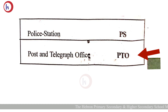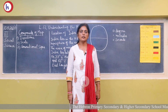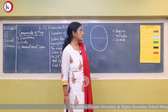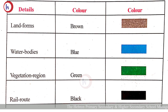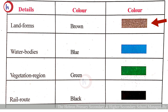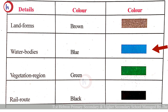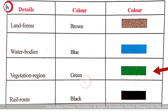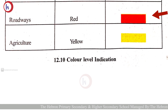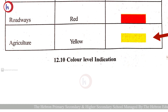Apart from conventional signs, physical and cultural details are shown with the help of different colors. Landforms such as plains and plateaus are shown in brown color. Water bodies like seas and oceans are shown in blue color. Vegetation regions such as forests and deserts are shown in green color. Rail routes are shown in black, roadways in red, and agriculture or farming in yellow color.